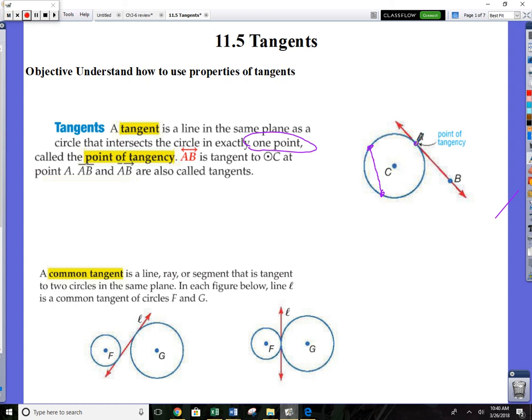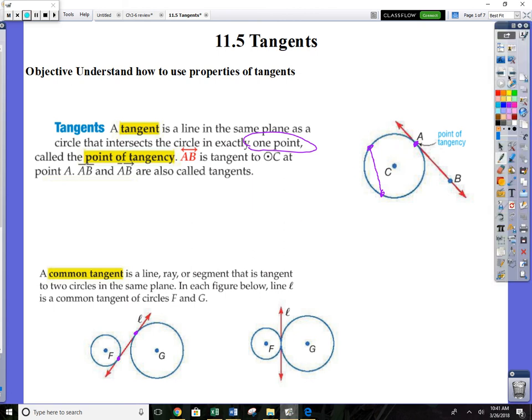There is such a thing as common tangents. If you got a couple circles, a common tangent touches that circle once and this circle once, could go right through the middle. So a tangent goes on the outside, touches the circle only once.